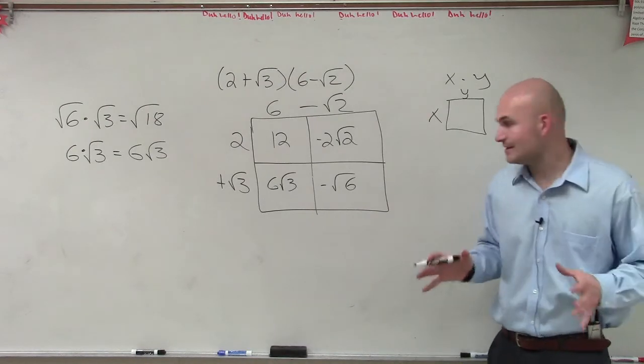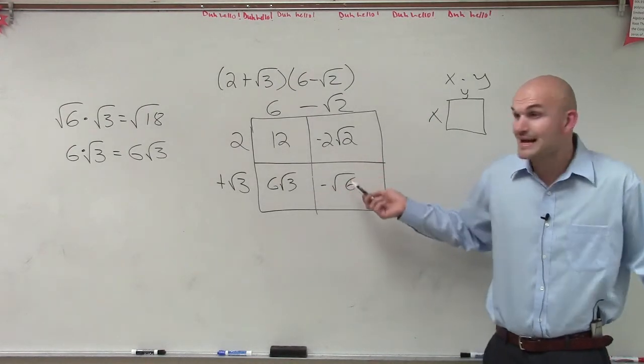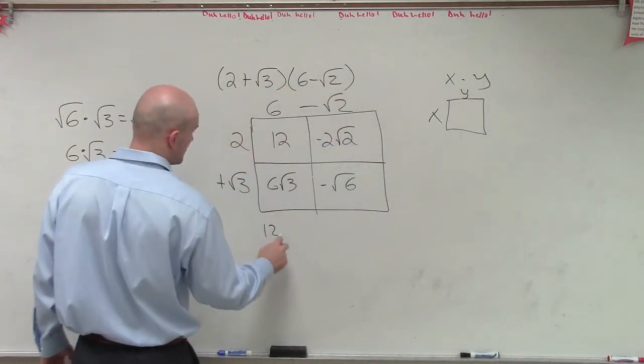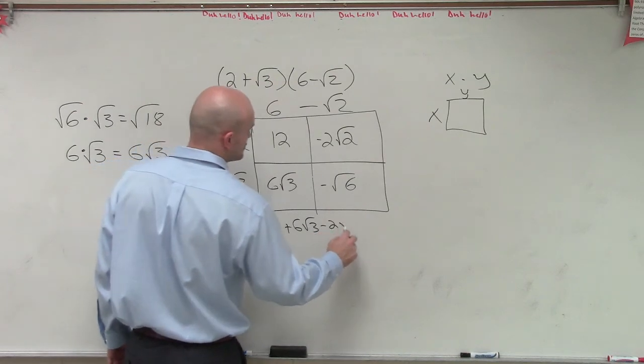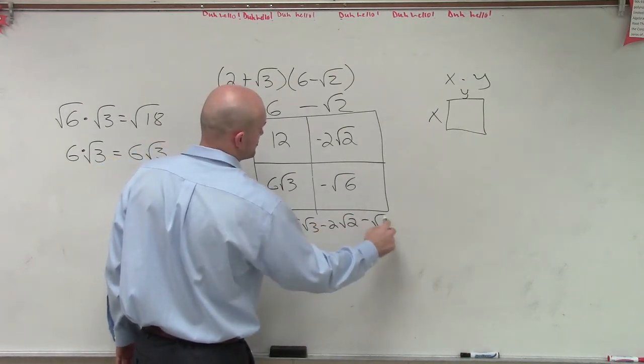Now, I'm looking at this, ladies and gentlemen. Do any of my square roots are the same? No. So I can't combine any of them. So your answer is just going to be 12 plus 6 square root of 3 minus 2 square root of 2 minus the square root of 6.